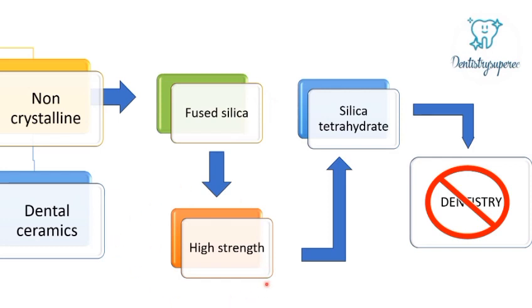Fused silica has very high strength. This high strength is due to the silica tetrahedral structure in which silica is bound to four ions. Importantly, this high strength is not due to the presence of the ions themselves, but due to the bond that they share between the silica and these ions.